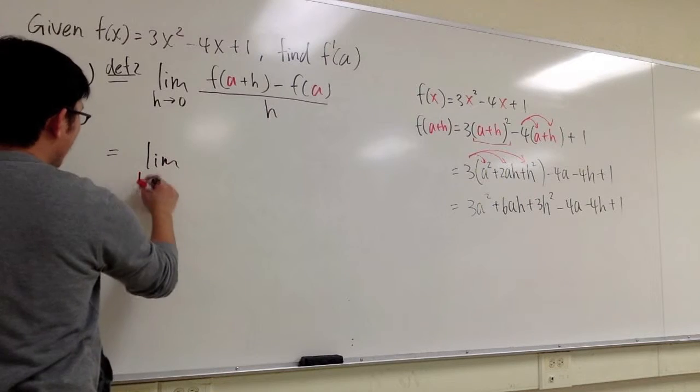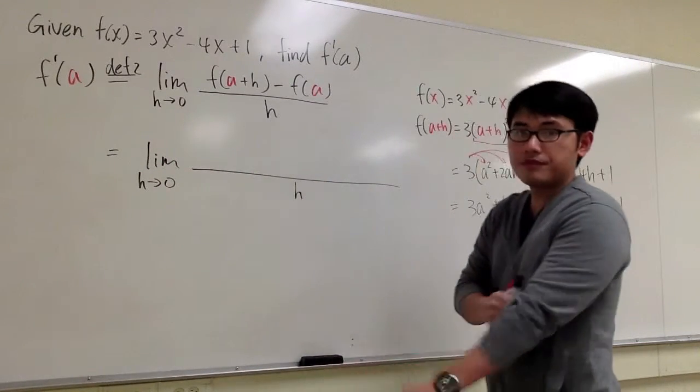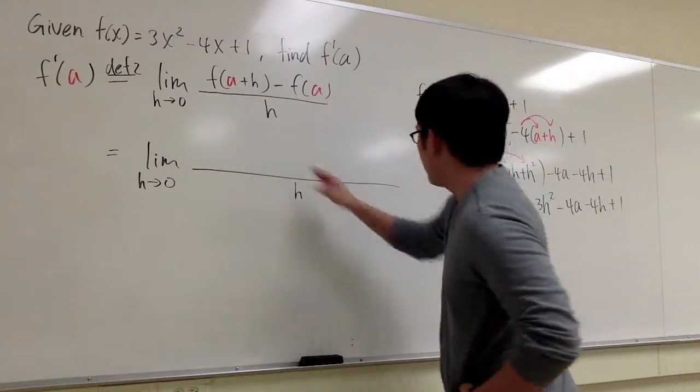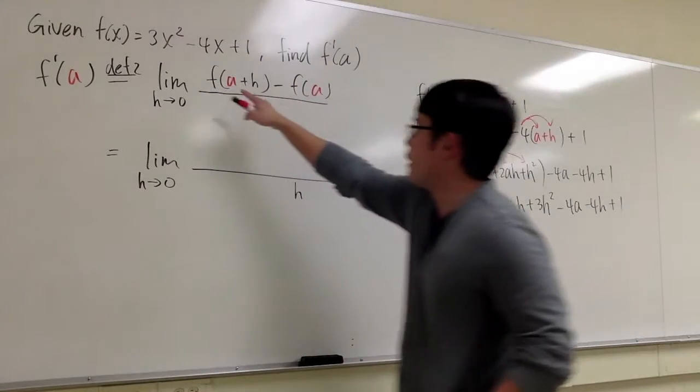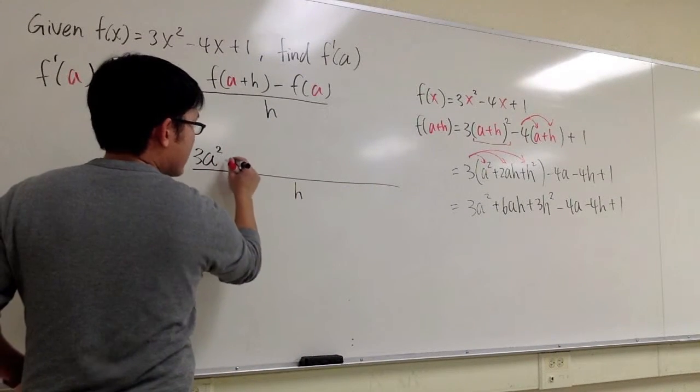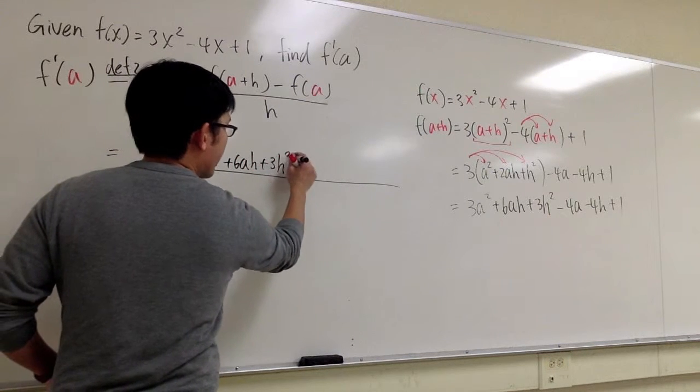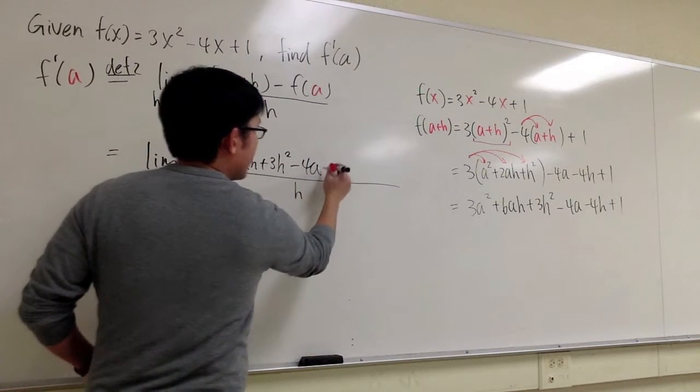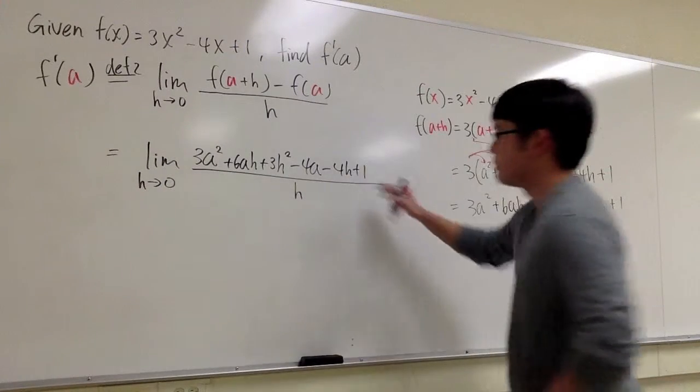This is the limit, h is approaching 0, and then we still have the h on the denominator. On the numerator, we have all these expressions, so we just need to write that down for f(a+h). So let me do that. So we have 3a² + 6ah + 3h² - 4a - 4h + 1, I'm just plugging that in there.